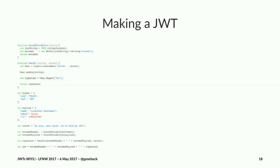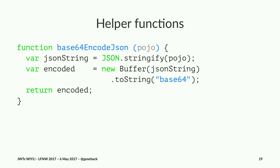So this is JavaScript code to make a JSON Web Token. We start out by defining a couple of helper functions. The first is a helper function to base64 encode a JSON object — a POJO. We pass that function a POJO, use the JSON library to stringify it, make a buffer object, convert it to base64, and return it.